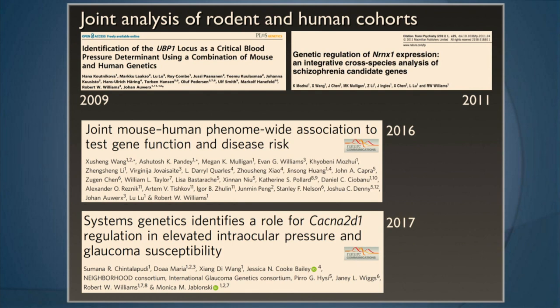We collaborated with Josh Denny to do the first joint mouse-to-human phenome-wide association study — bringing those two worlds together. And one study we're most proud of: we are now actually getting to clinical care in humans with glaucoma, with a candidate gene that was initially mapped in mice. This is now in early-stage clinical trials for glaucoma as of 2017.